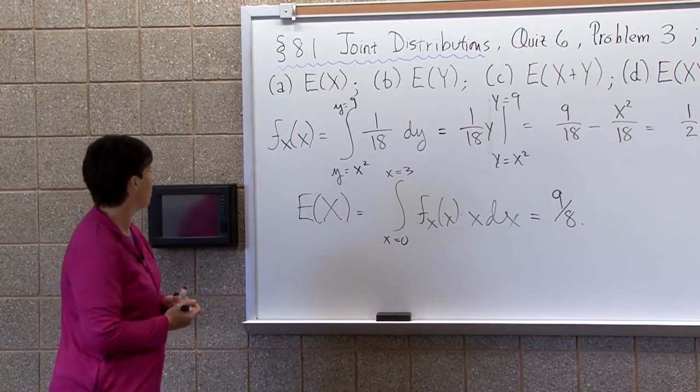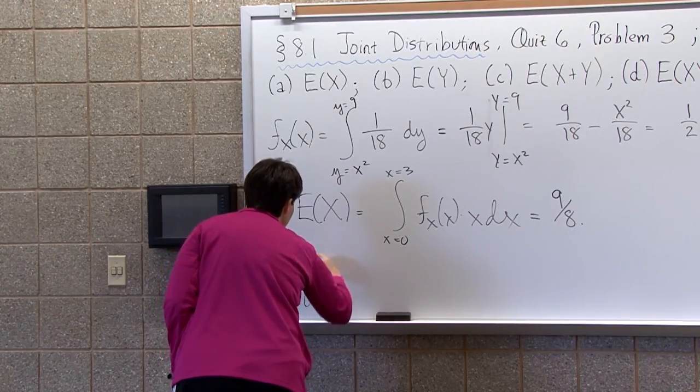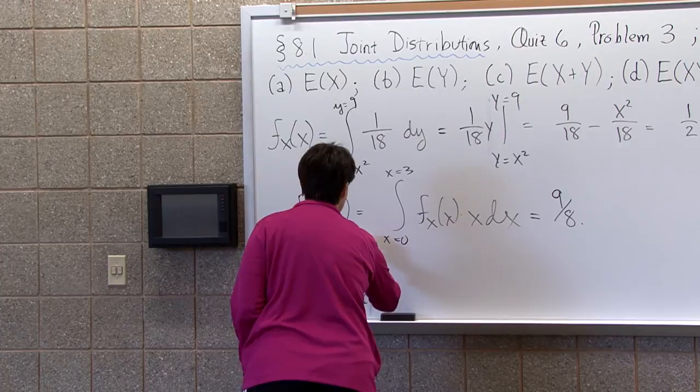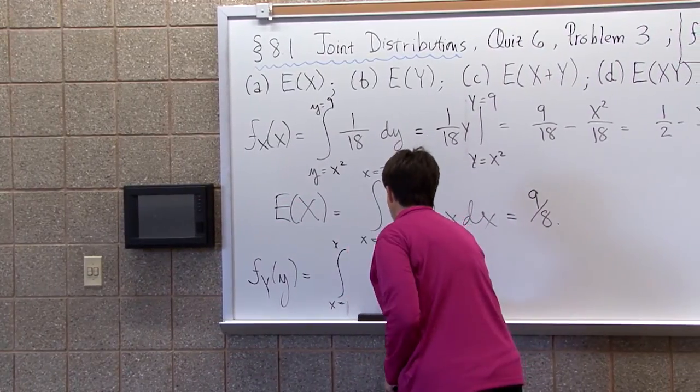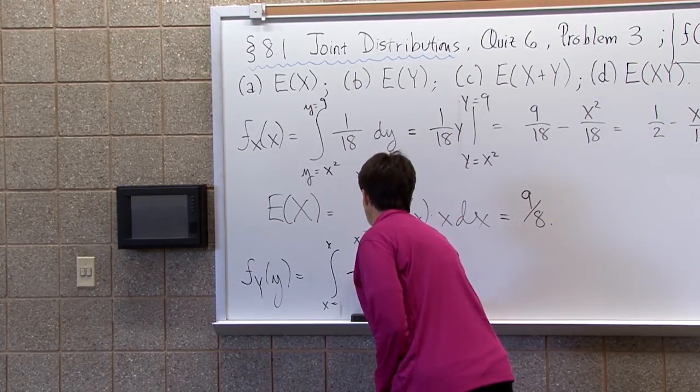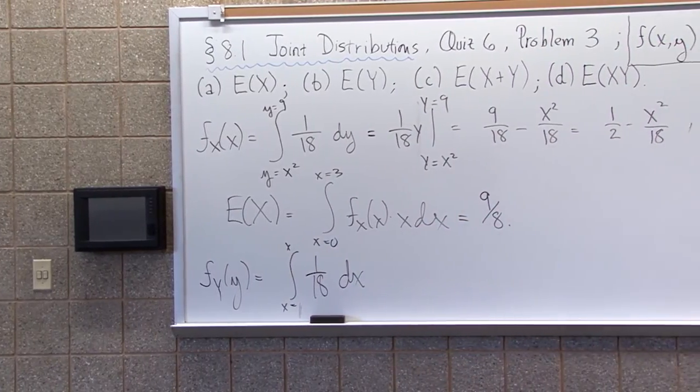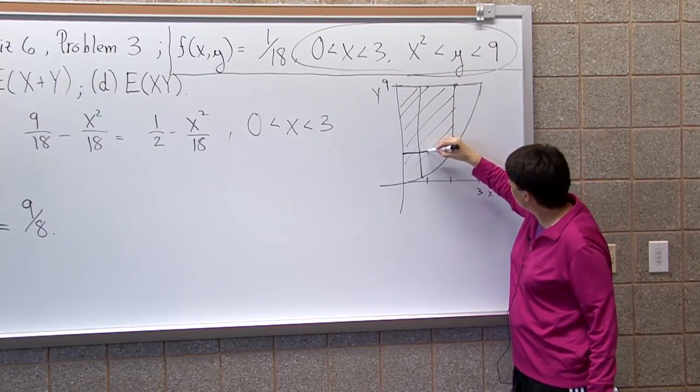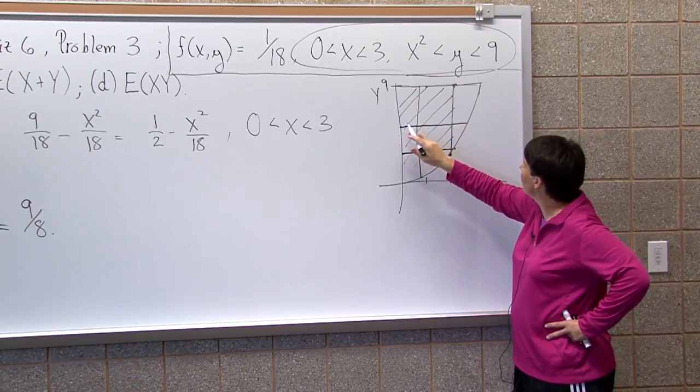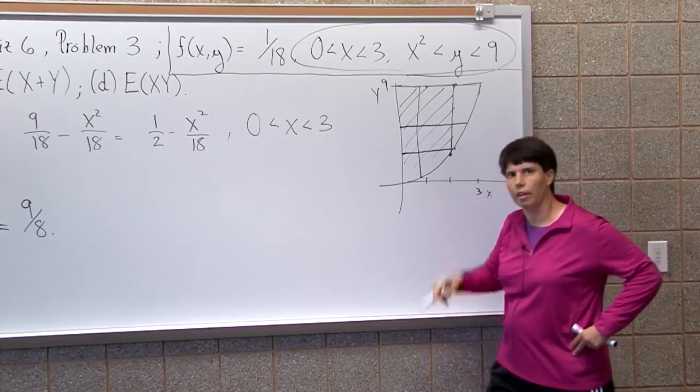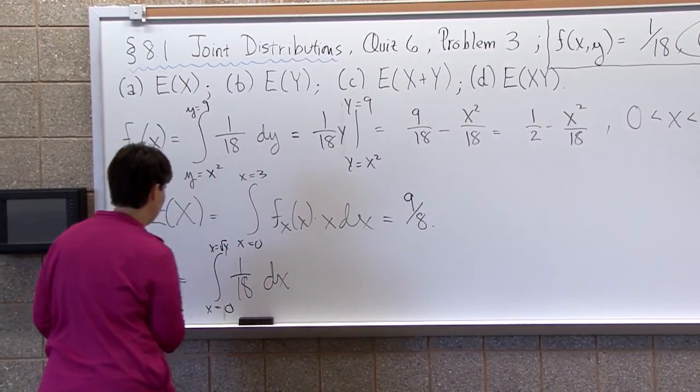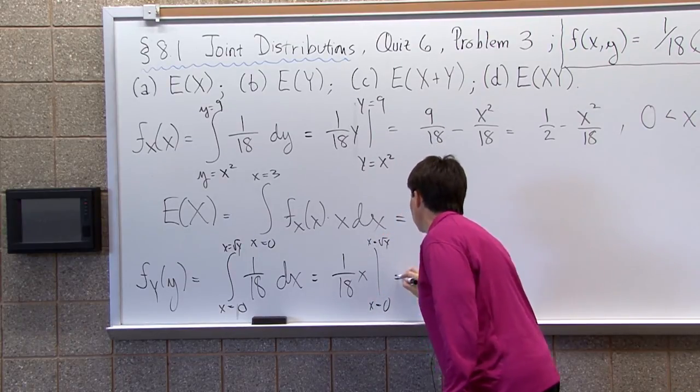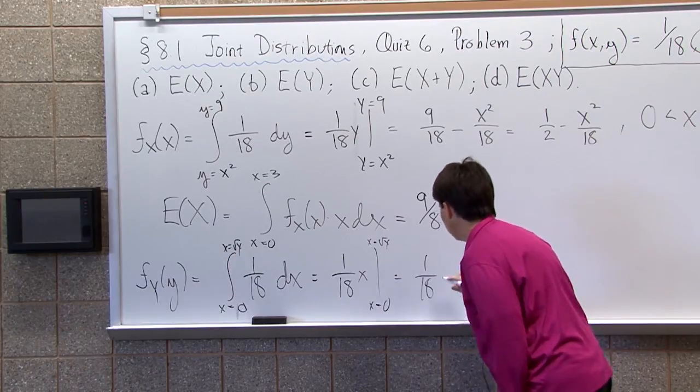Let's find the expected value of y. I need the marginal of y. I think that's a good exercise. F of y of y, I'm going to be integrating my joint over my x's. This is going to go from x equals something to x equals something over my x's dx of my joint 1/18th. The problem here is what are my bounds? I choose any y, here's my y's, they're going from 0 to 9. Can you see where my x's are going? Choose any x in here, it's going to go from here to there. My x's are going from 0 to the square root of y. So this is going to be 1/18th x, x equals square root of y, x equals 0. This is going to be 1/18 square root of y.